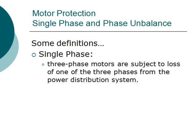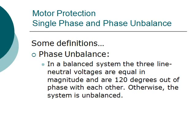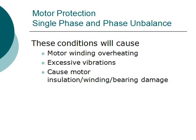Single phase and three phase unbalance protection: three phase motors are subject to loss of one of the three phases from the power distribution system. In a balanced system, the three line-to-neutral voltages are equal in magnitude and 120 degrees out of phase with each other; otherwise the system is unbalanced. This condition will cause motor winding overheating, unbalanced torque, vibration, and motor insulation, winding, or bearing damage.